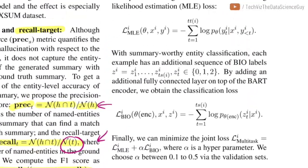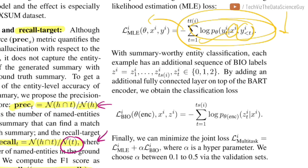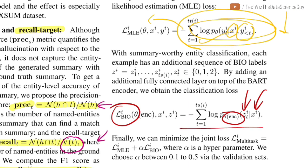Looking at the two losses formally: the first loss is the standard likelihood estimation — you want to maximize the probability of token Yi given all previous tokens and input Xi, so you minimize the negative log-likelihood. The second loss is the BIO classification loss: given encoder token Xi and model parameters theta, the model should correctly classify its BIO tag. The combined multitask loss is L1 plus alpha times L2, where alpha is a parameter controlling how much of the named entity loss is infused into the thought vector representation.